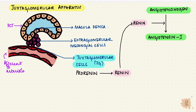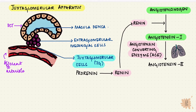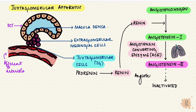Angiotensin-1 is a mild vasoconstrictor, but is not significant enough. Within a few seconds to minutes, it gets converted to a smaller peptide, angiotensin-2, by the angiotensin-converting enzyme predominantly in the lungs. Angiotensin-2 is the one that is strong enough to have effects before it gets inactivated by angiotensinases.